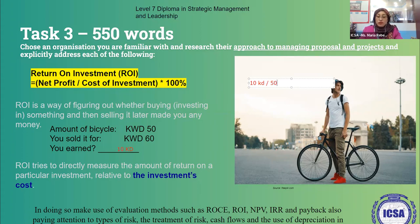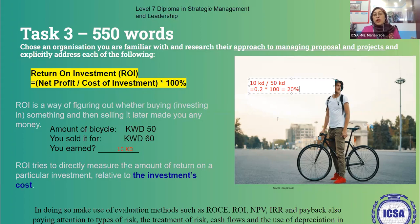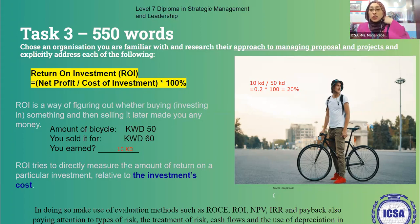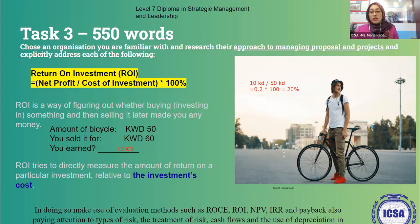With net profit of 10 KD divided by the investment cost of 50 KD, you get 0.2, which multiplied by 100 gives 20%. Therefore, buying and selling a bicycle — bought at 50 KD, sold at 60 KD — gives an ROI of 20%. Of course, if it's a used bicycle there would be depreciation to consider, but that's another story. That's how you calculate ROI.